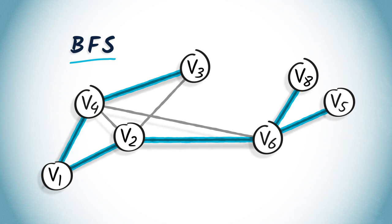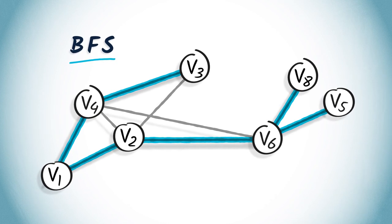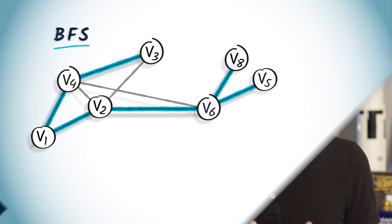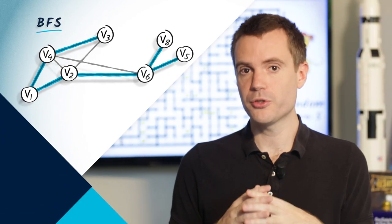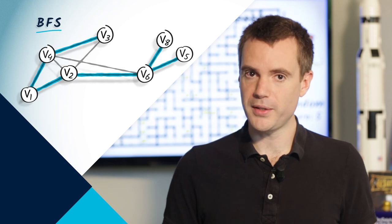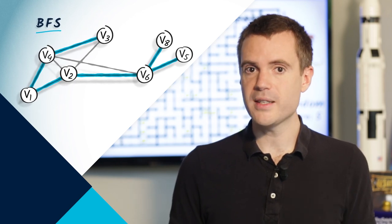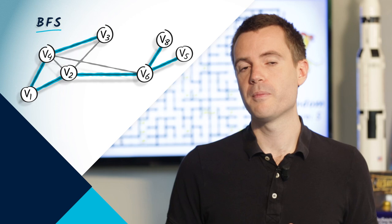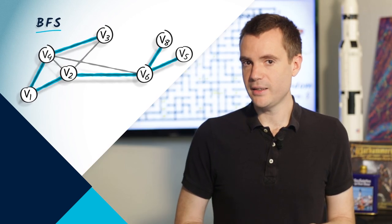Because a BFS is performed by gradually increasing the hops from V1, a spanning tree obtained from a BFS will always provide the shortest path from V1 to any other vertex in the graph, provided that the graph is unweighted. This can be seen clearly in this example.